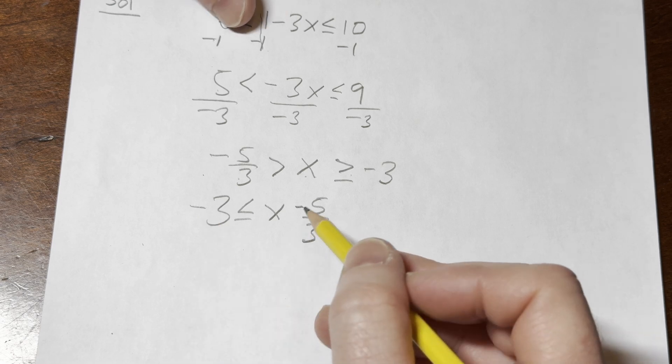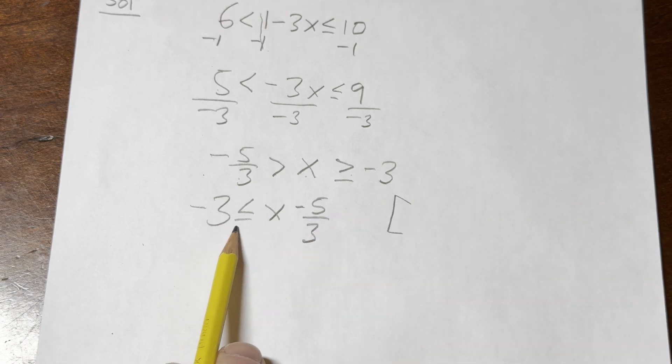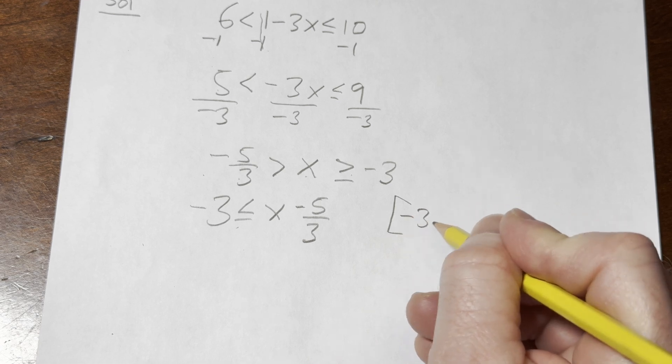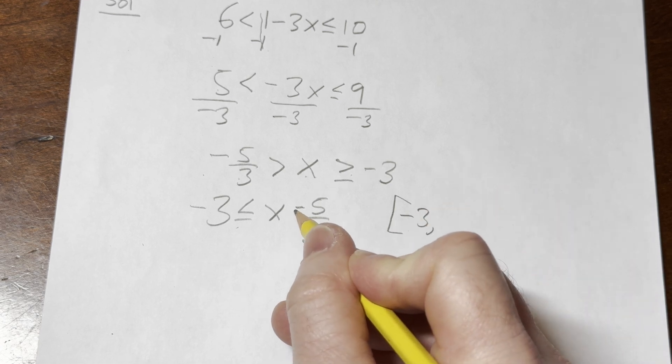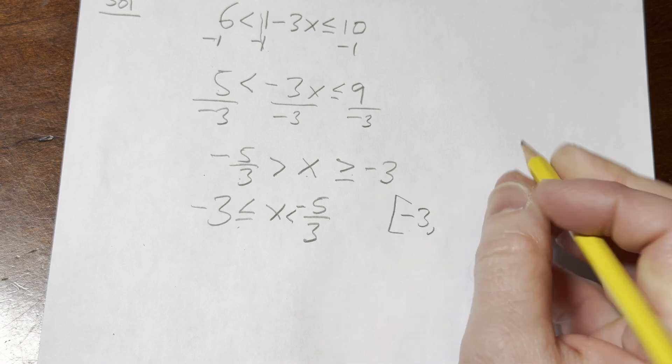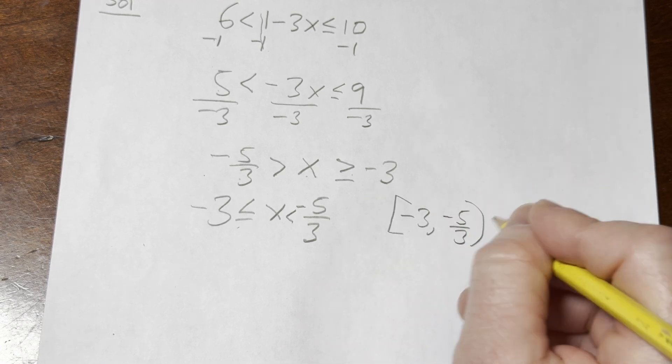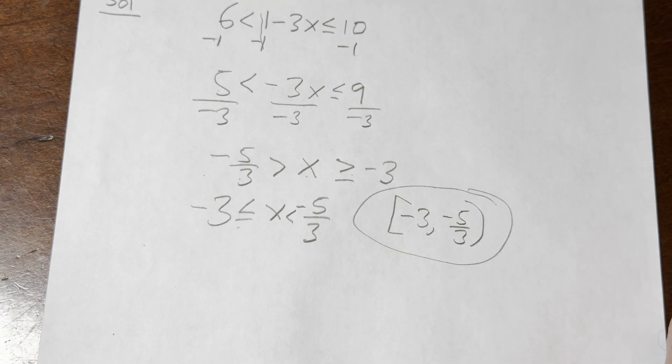And from this here, you can get the answer. It's going to be bracket. Use a bracket because you allow for equality. Comma, and then, whoops, I forgot the less than there. And this is going to be negative 5 thirds. It's a strict inequality, so we use a parenthesis. And that would be the final answer.